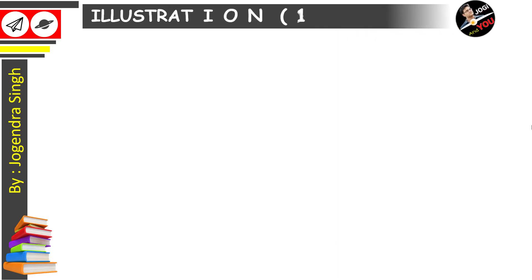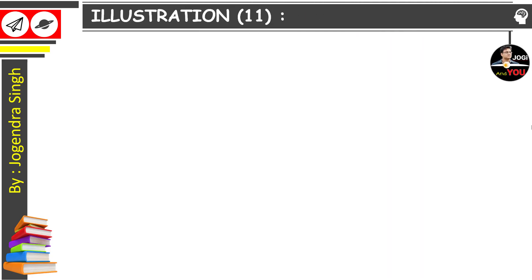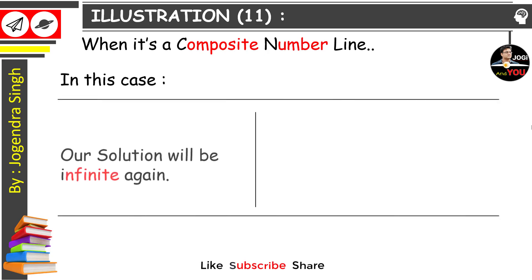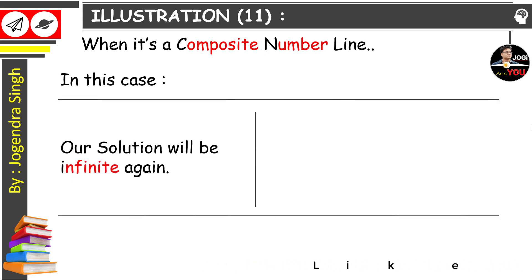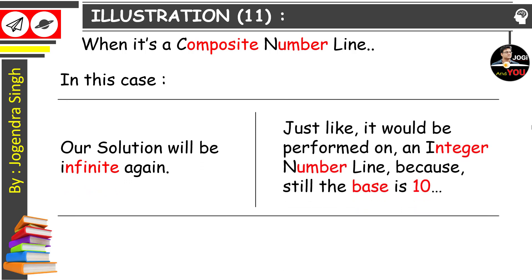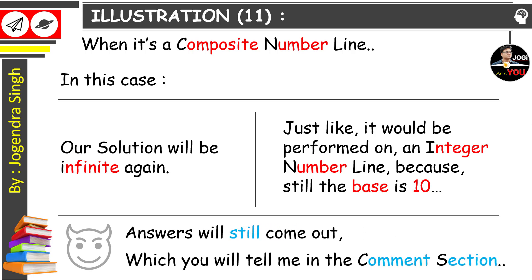And now see illustration number 11. When it's a composite number line, in this case our solution will be infinite again, just like it would be performed on an integer number line, because still the base is 10. And that's not all I say here. Answers will still come out, which you will tell me in the comment section.